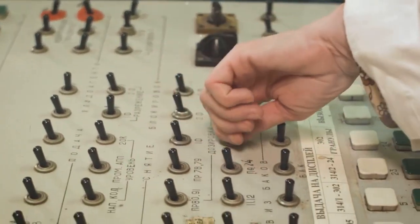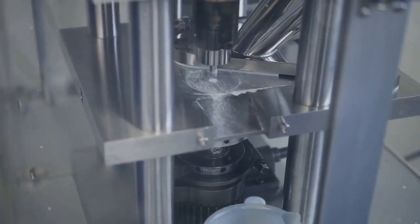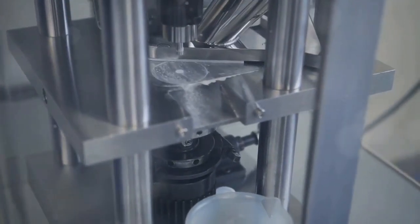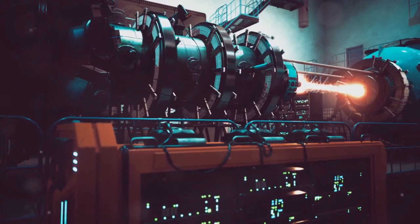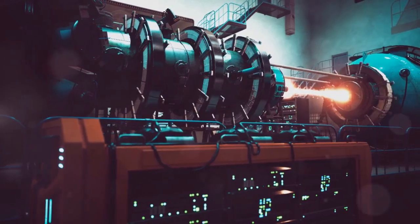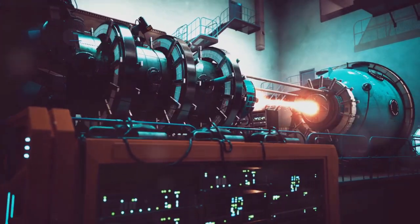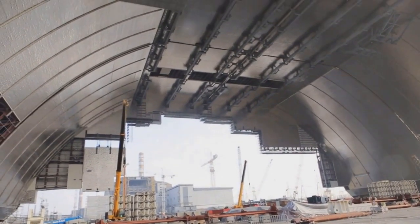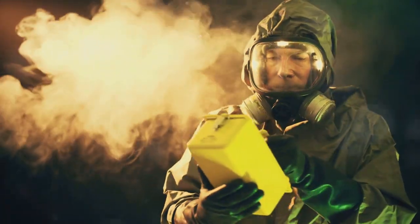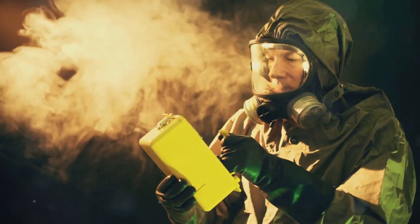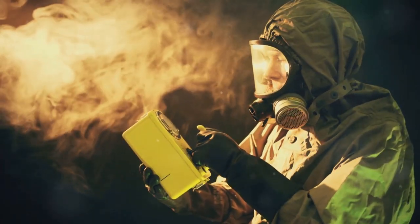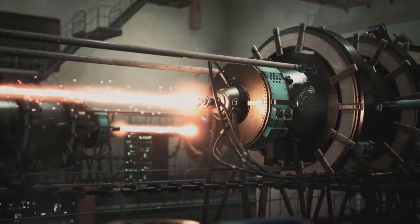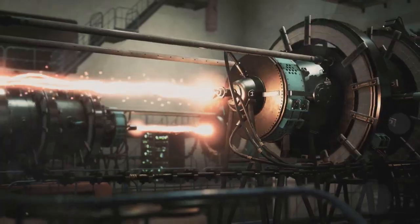One crucial safety feature is the implementation of multiple redundant control systems. These systems constantly monitor reactor parameters and can automatically shut down the reaction if any anomalies are detected. This ensures that the reactor operates within safe limits at all times. Containment structures are another essential safety component. These structures are designed to contain any accidental releases of radiation or other hazardous materials. They act as a final barrier to protect the environment and the public in the unlikely event of a major malfunction.